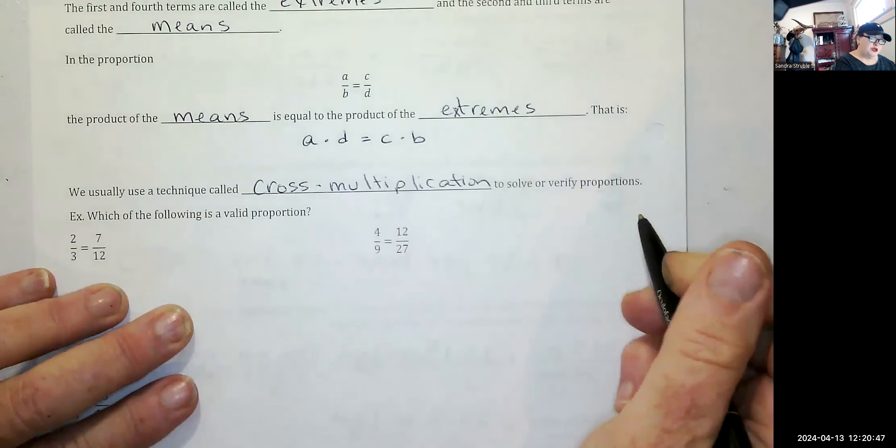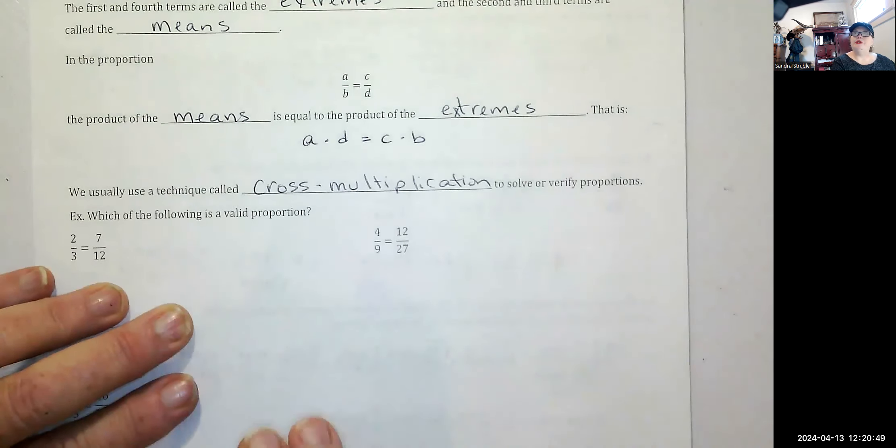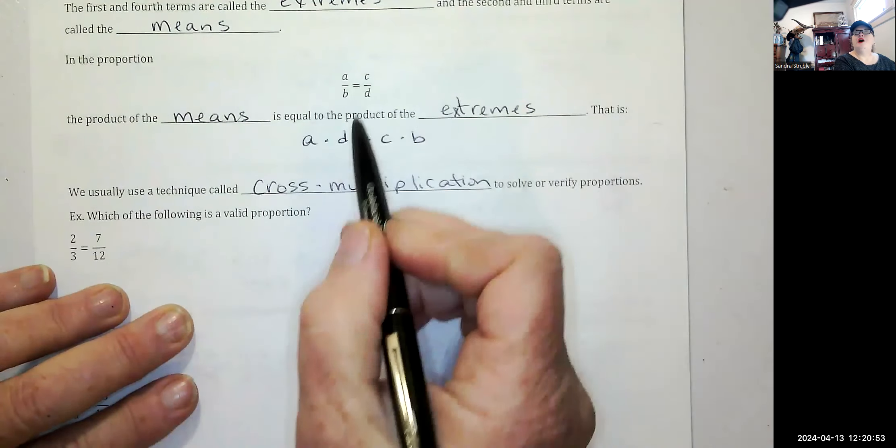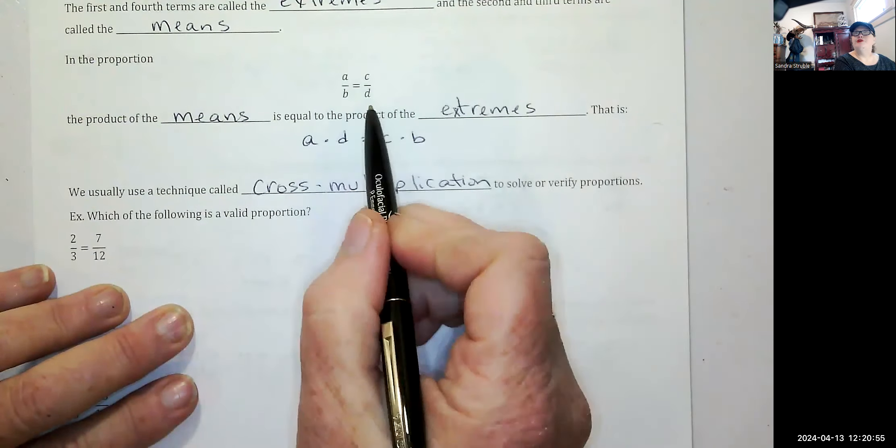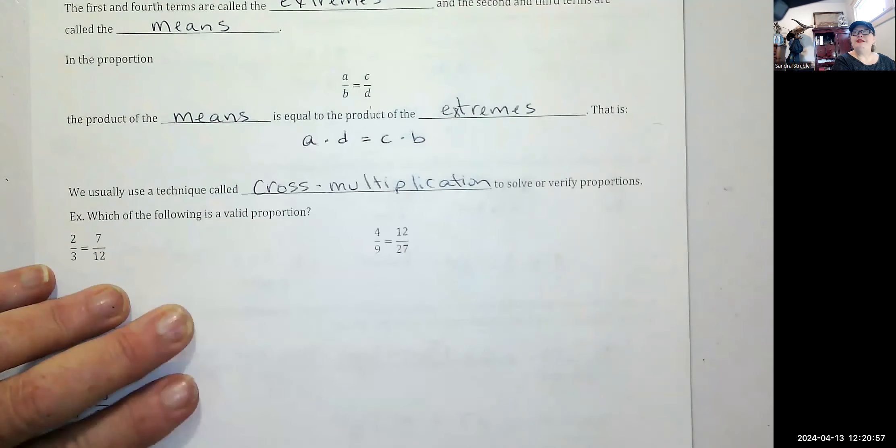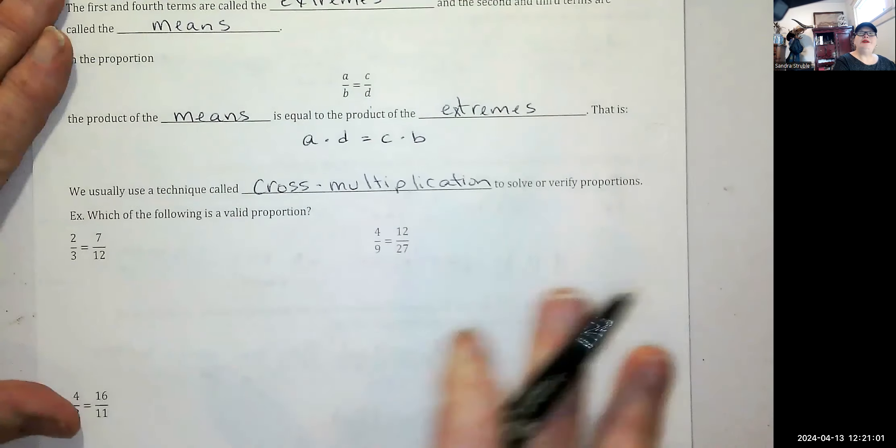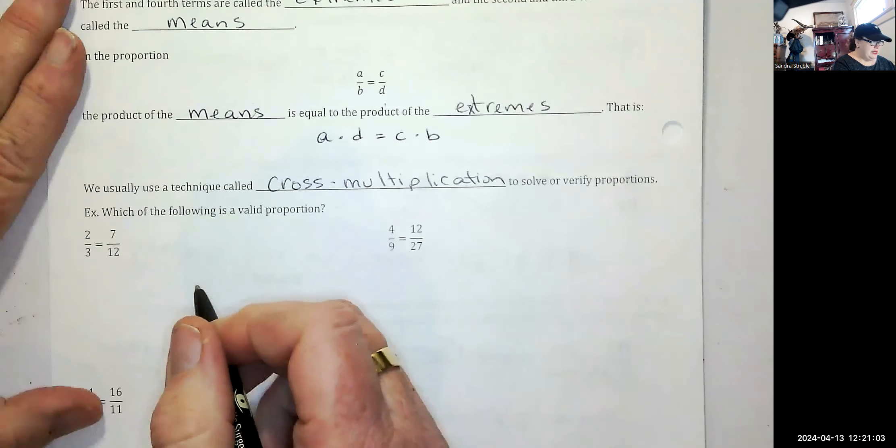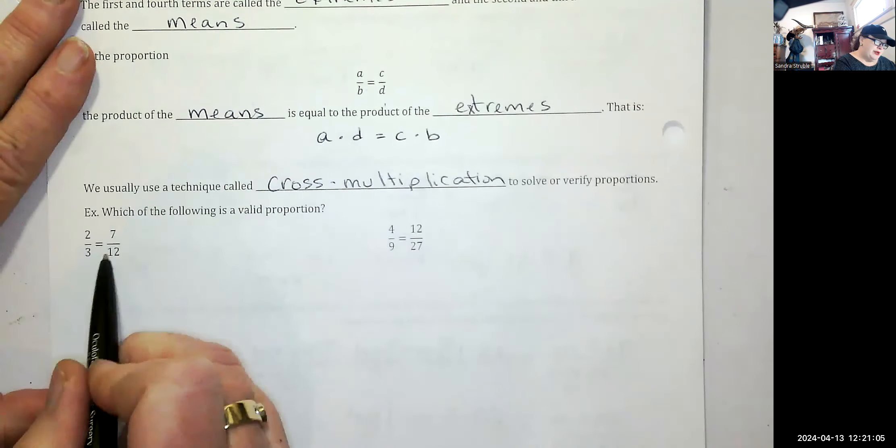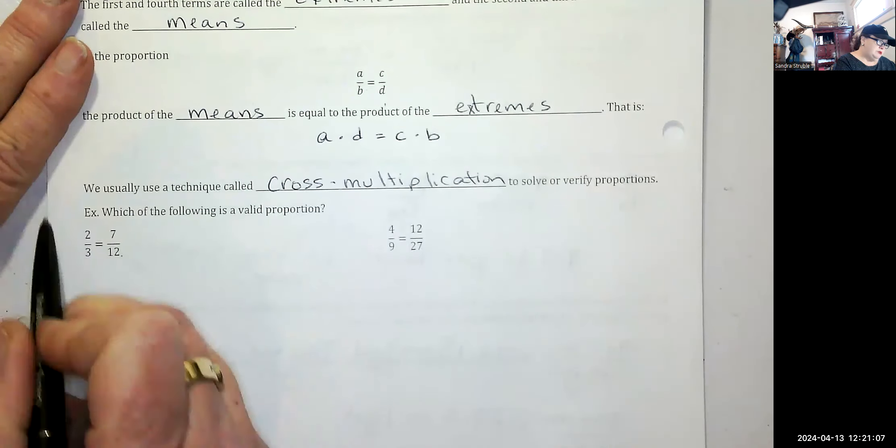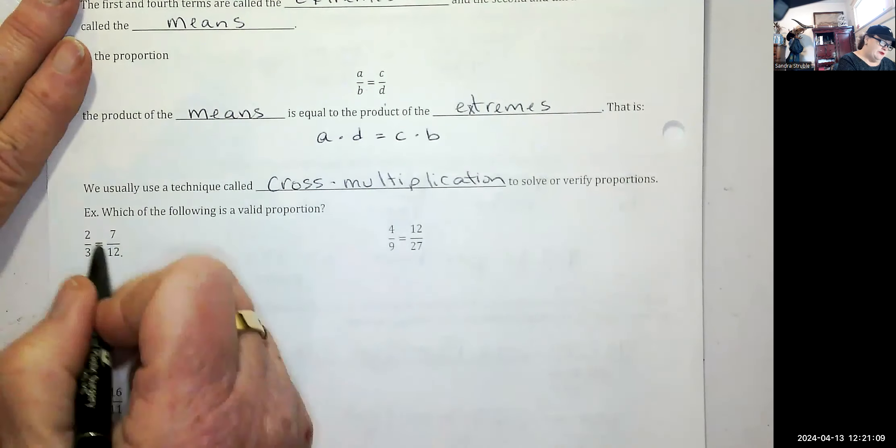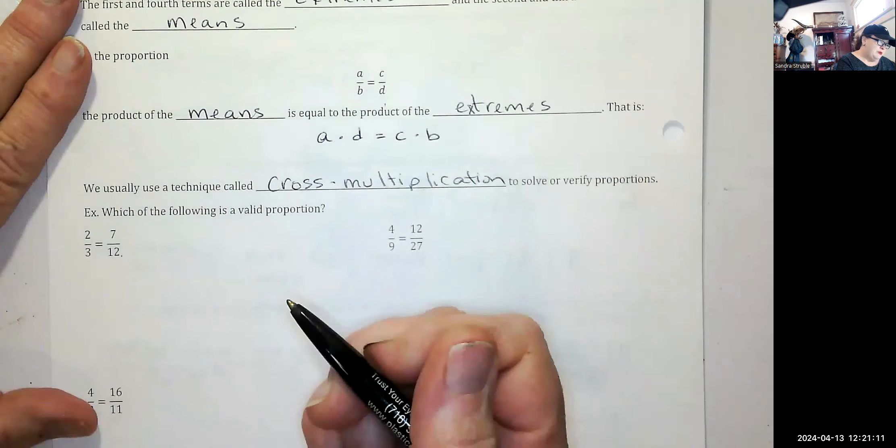To solve or verify proportions, the only time you can use cross multiplication is when you've got one set of fractions equal to another set of fractions. That's the only time. There can't be anything else involved. So two is to three as seven is to 12, we can just cross multiply to see if they're verified and if they're a proportion.